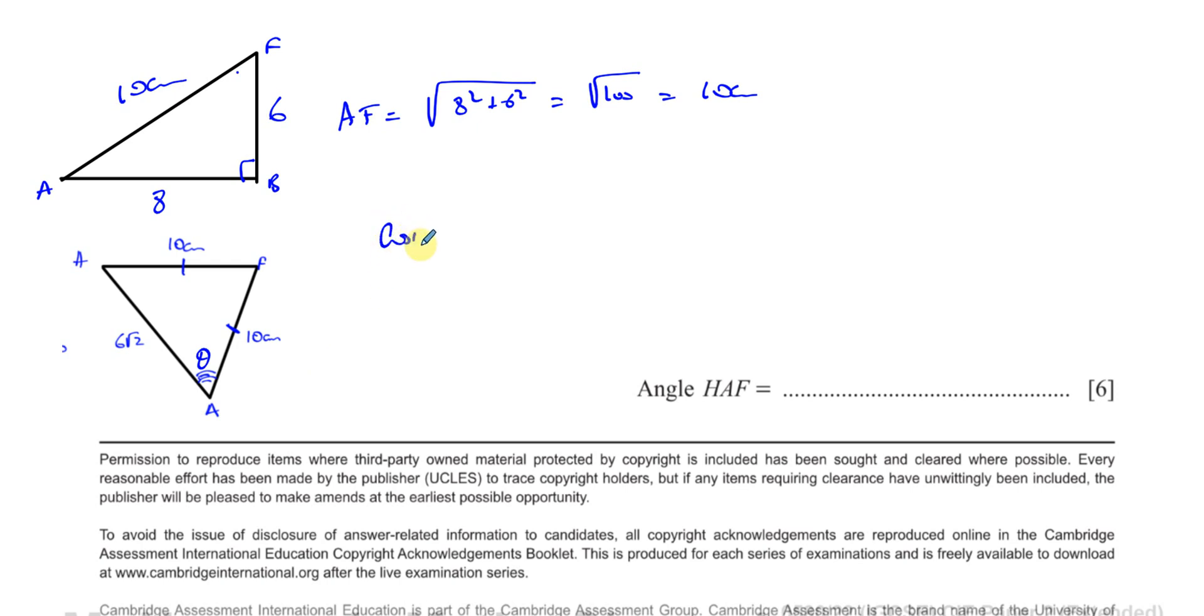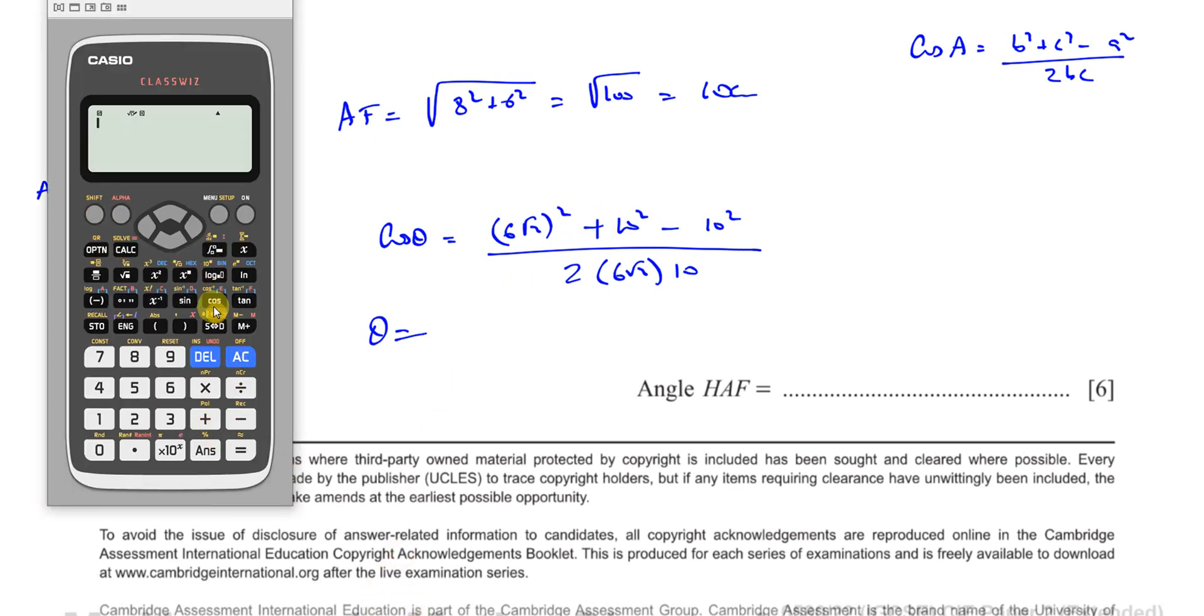I know that the cosine of this angle is given by, now remember the formula for cosine rule is cosine of the angle A equals B squared plus C squared minus A squared over 2BC, where A is opposite the angle we're trying to find. So 10 is our A, and B and C are the two sides that make the angle. So you're going to have 6 root 2 squared plus 10 squared minus 10 squared over 2 times 6 root 2 times 10.